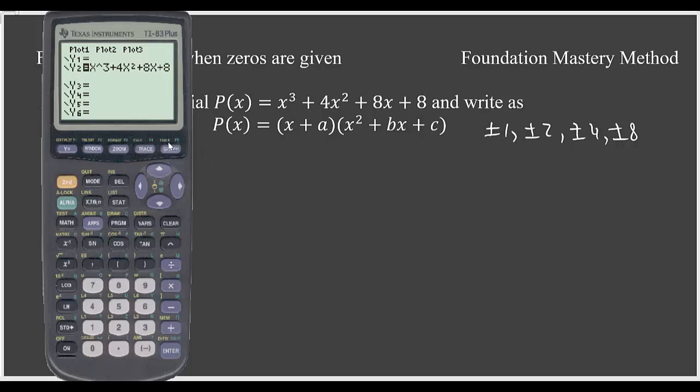So we graph this one in our standard window. Let me go with zoom 6. So I can see I have a zero here. So let us see what is that zero. Second trace 2 is zero. We need to use our left bound left side, enter. Move it to the right side, enter. So as we have expected that some will come from here if we have any rational zeros. So we got negative 2 is a rational zero.